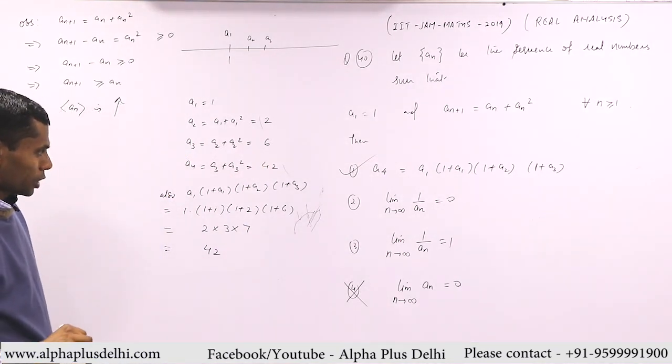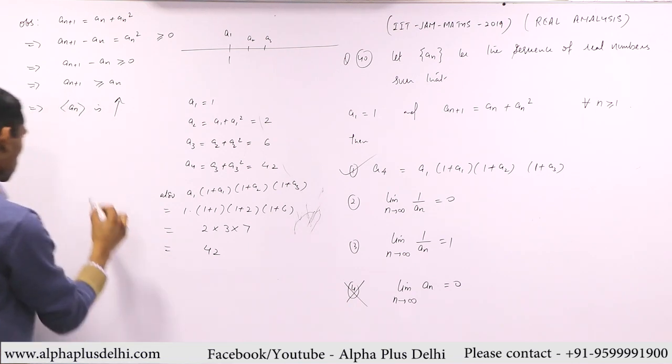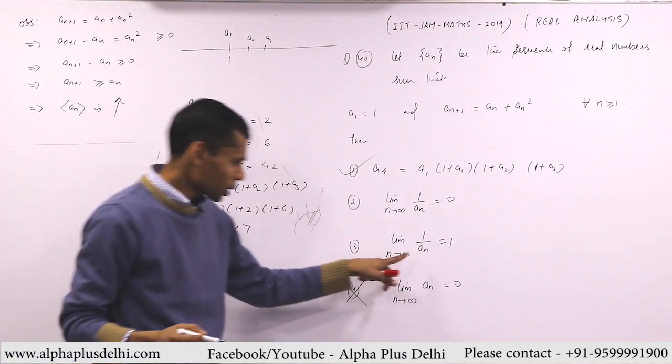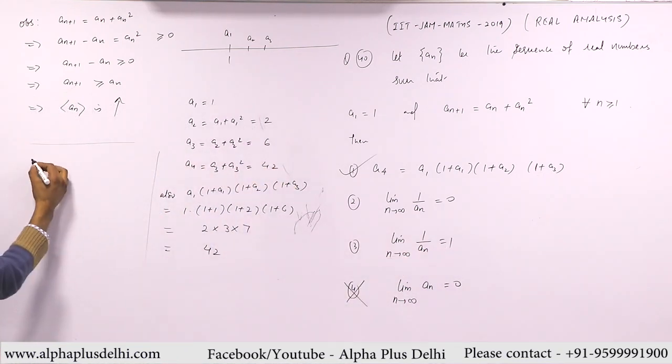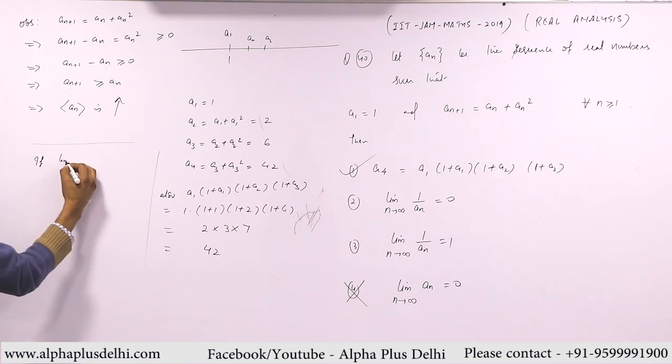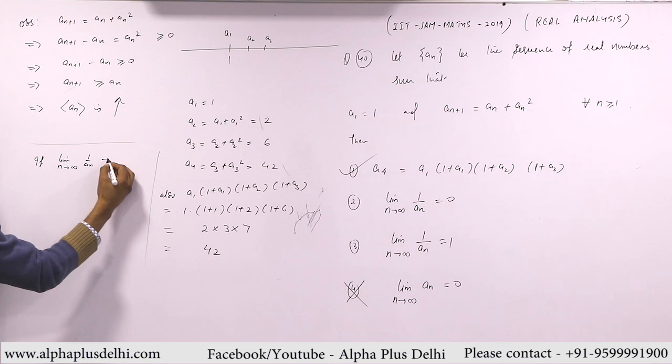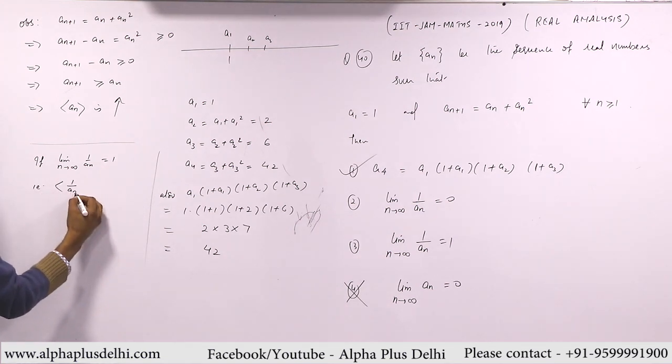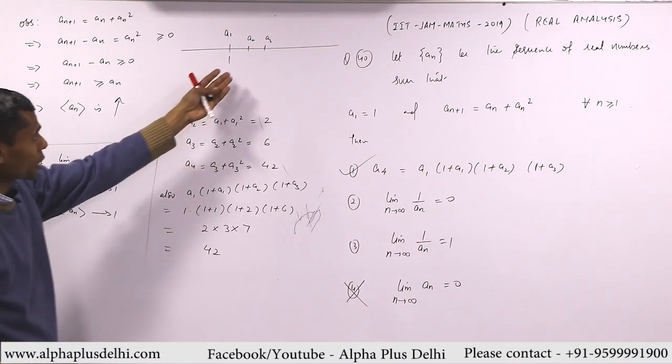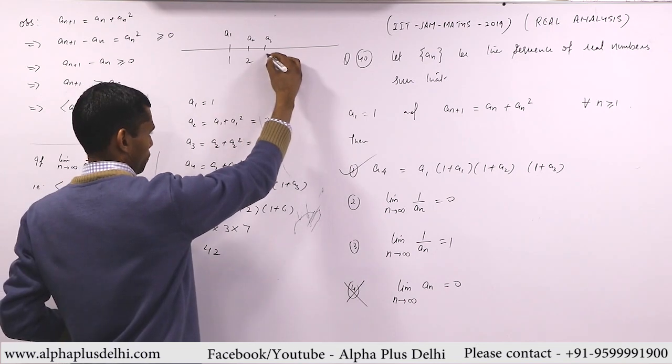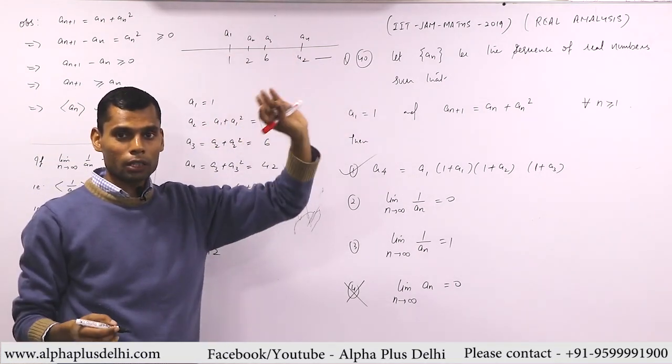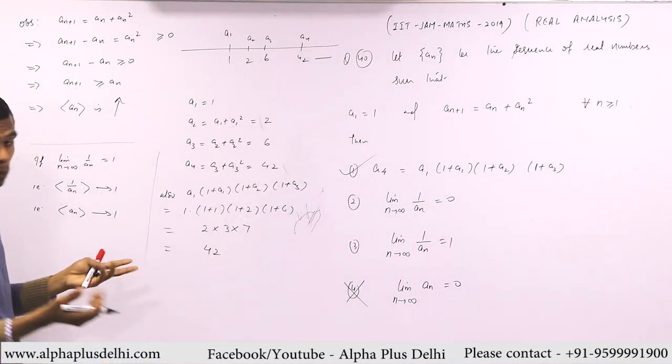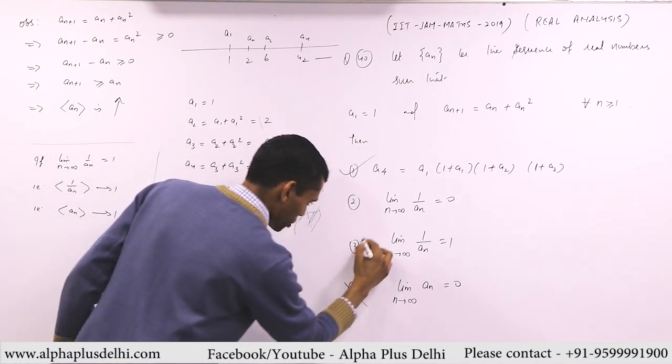Now you have second and third. So let's also look at the third option. If limit n goes to infinity 1/a_n is 1, that means the sequence 1/a_n goes to 1. Then we'll apply the reciprocal theorem. The limit of sequence a_n should also be 1. But from this diagram it is not possible. All the terms are going far away from 1. So the limit cannot be 1. So that means this third option is also incorrect.